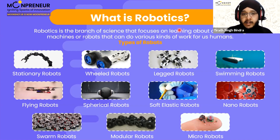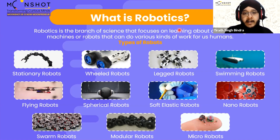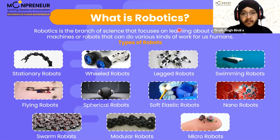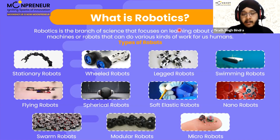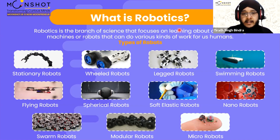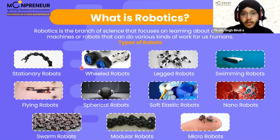So we use robots for three reasons: to solve a problem, to automate processes that are unsafe for humans, and to increase output. In a production factory, machines can produce much faster than humans. Previous jobs may be lost, but new jobs are created to maintain, program, and monitor those machines.